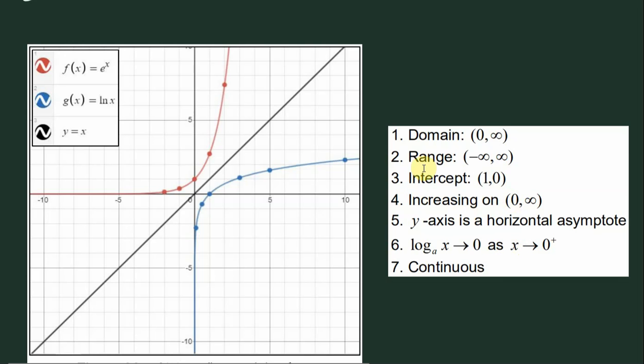On the right here are the different properties of g(x) equal to ln of x. We have here the domain is from 0 to positive infinity. Now we need to take note here that 0 is not included and it goes all the way to positive infinity.